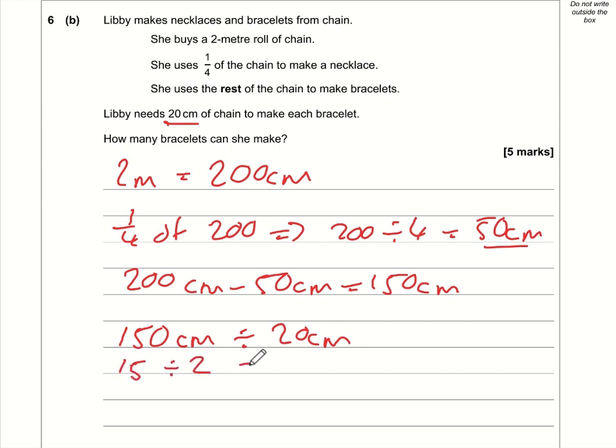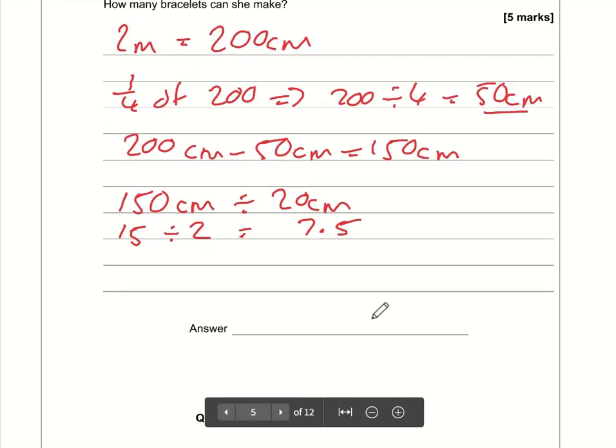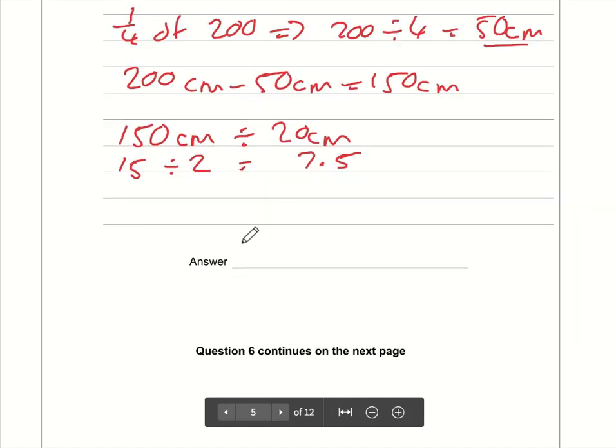So she can make 7.5 bracelets. So how many bracelets can she make? Well, she can't make that eighth bracelet, so therefore the answer is simply 7. We're going to have to round down in this case.